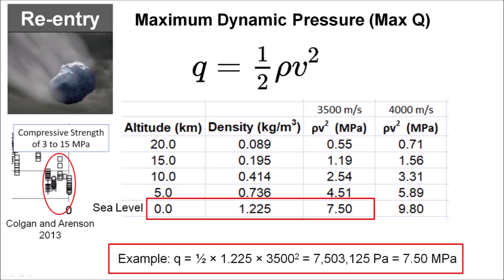During reentry, the maximum dynamic pressure encountered by a projectile, called MaxQ, is one half of the air density multiplied by the square of the velocity. Calculating MaxQ for speeds 3.5 and 4 km per second, we can see that the aerodynamic forces are smaller than the compressive strength of glacier ice, which can be 15 MPa. This means that the ice boulders could have survived reentry through the atmosphere without breaking up.